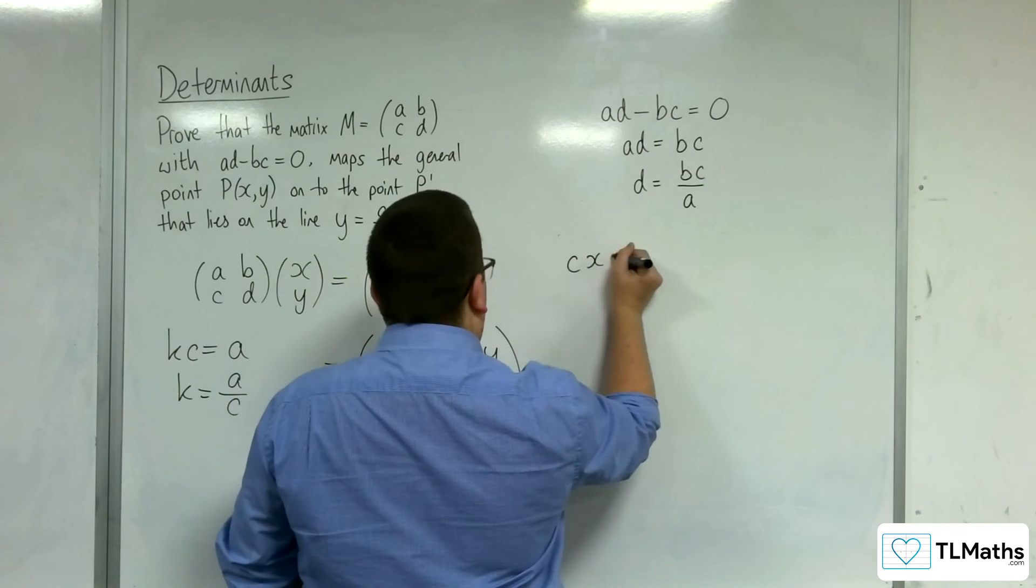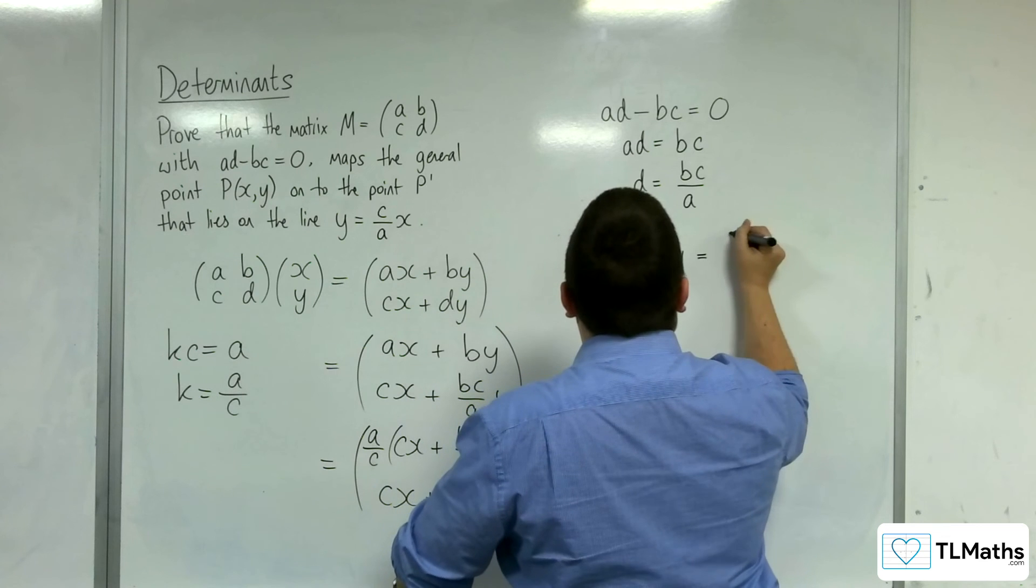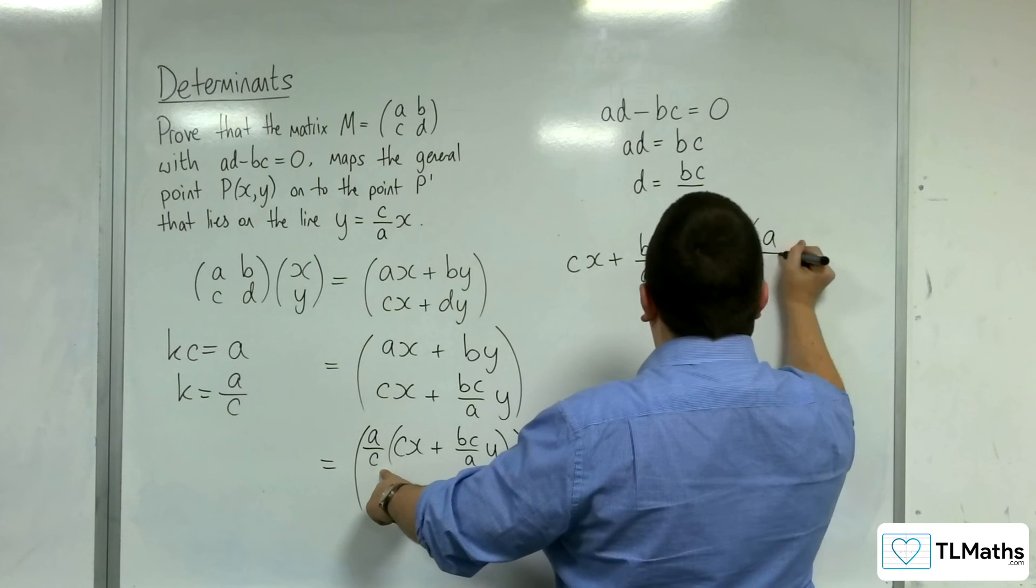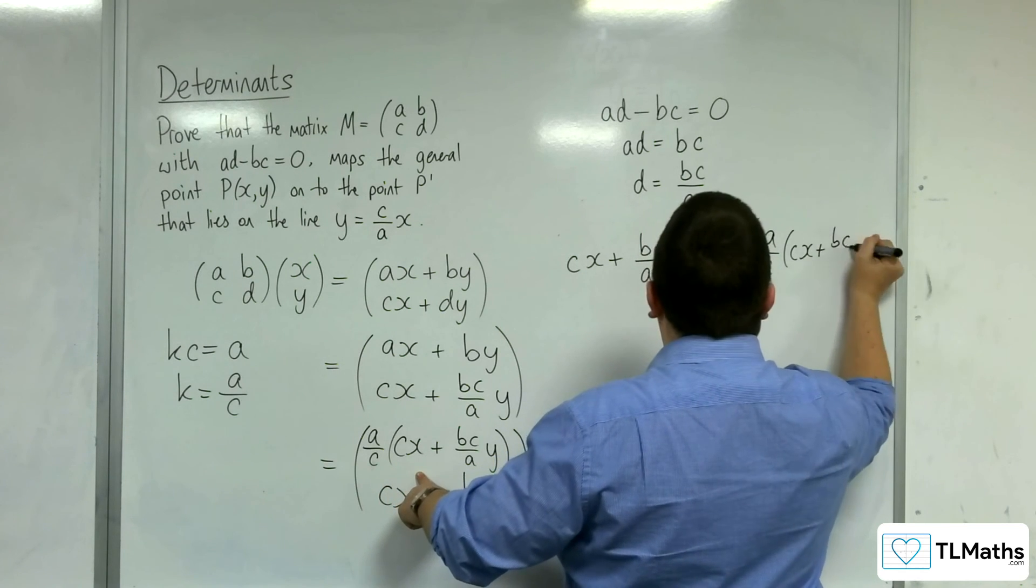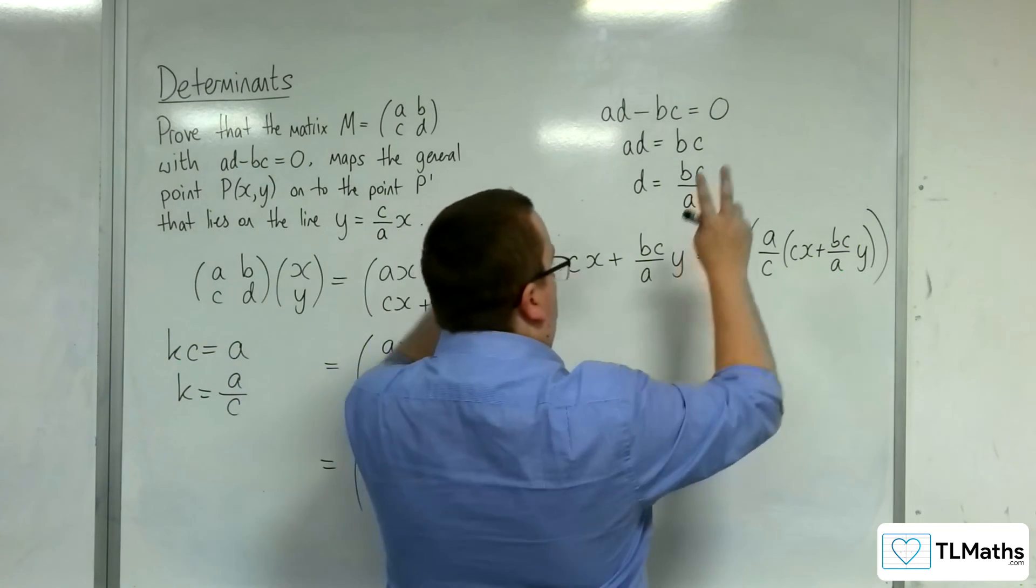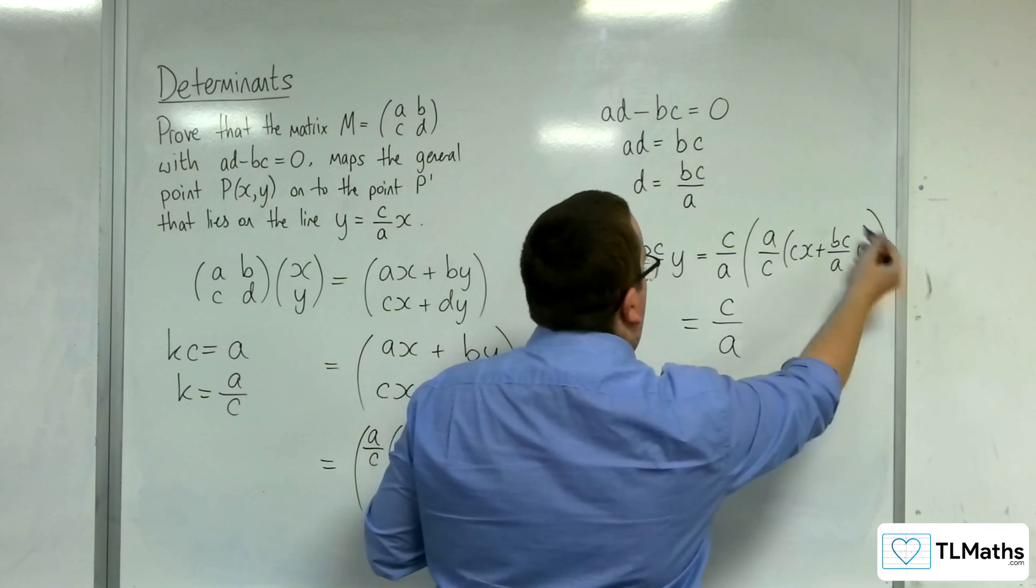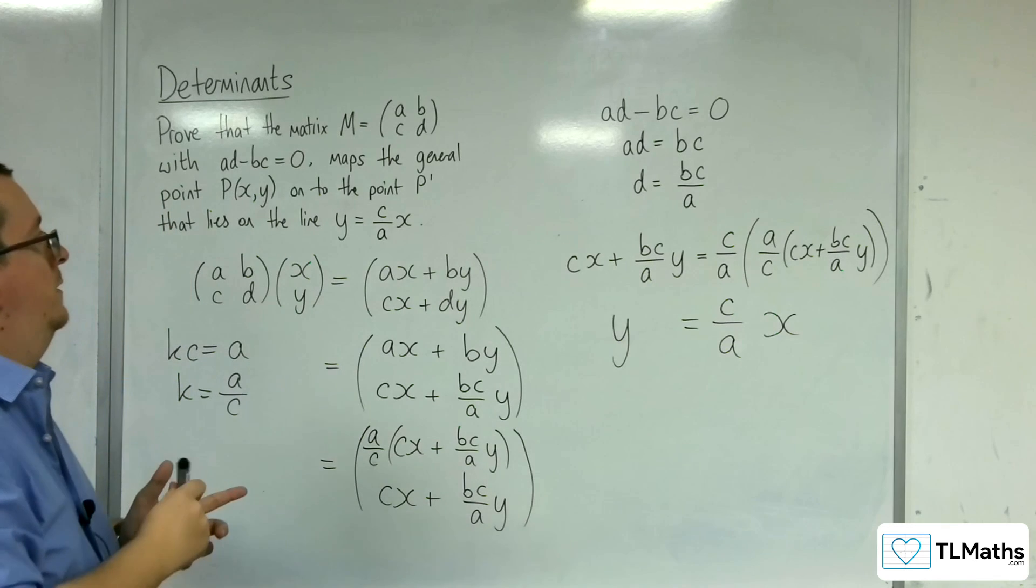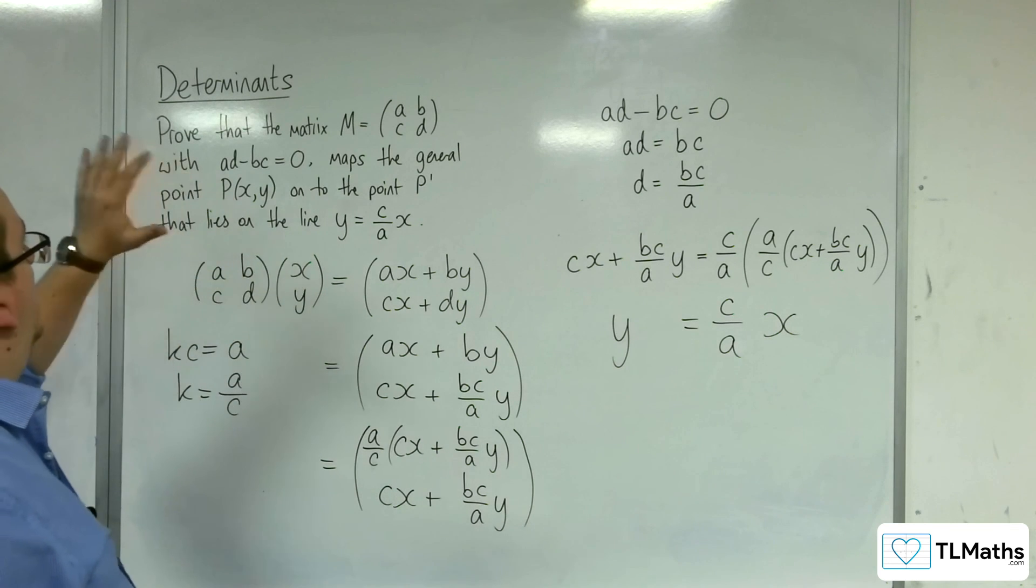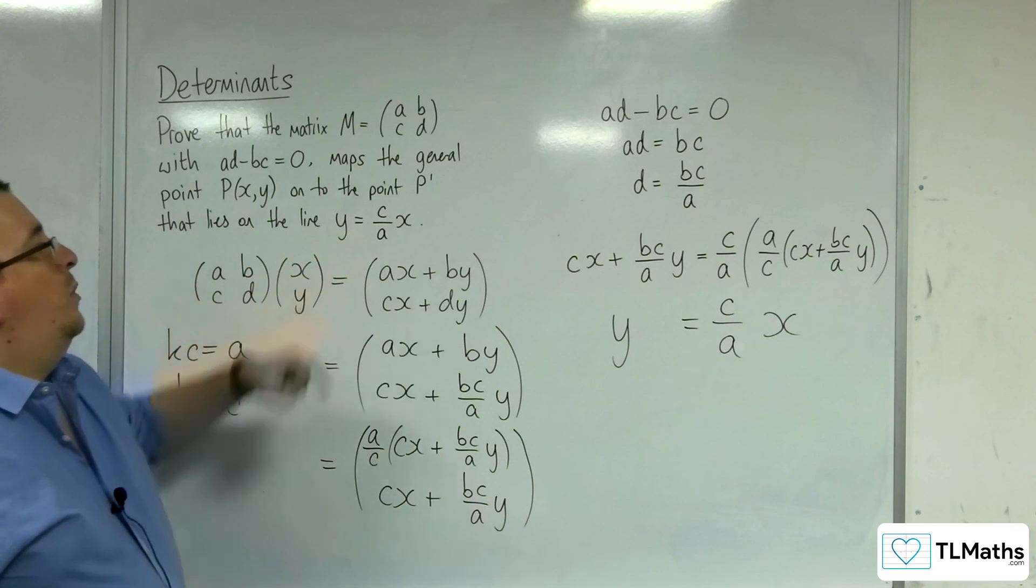So, cx plus bc over a y is equal to c over a times the a over c, cx plus bc over a y. So, the y coordinate is equal to c over a times the x coordinate. And so, that is precisely the line that I was looking for. And so, that proves that this matrix will map the general point (x, y) onto the point P' that lies on the line y equals c over a x.